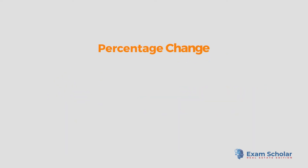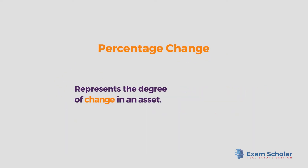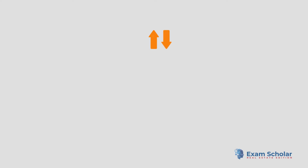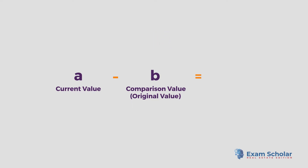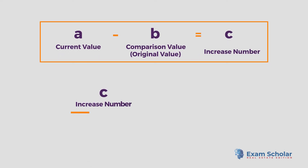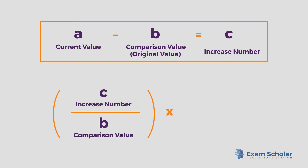The next formula you need to know is percentage change. This number represents the degree of change in an asset. The first step is to determine the difference — either an increase or decrease — between the current and comparison value, also called the original value, which is typically the purchase price. Once you have your increase number, divide it by the original value, then multiply this figure by 100 to come to the percentage change.